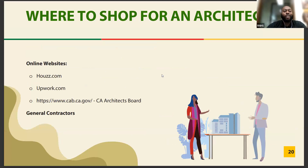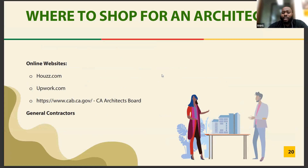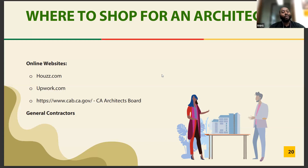Where to shop for an architect: online sites like Houzz.com, Upwork.com, the California Architects Board, Craigslist, and word of mouth. General contractors will often have architect recommendations — be aware those may be friends of theirs and possibly more expensive, but working with a contractor's recommended architect can speed up the project timeline since they already have an established relationship.